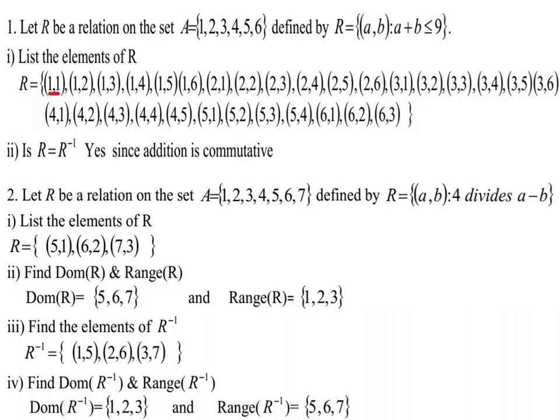Simply, the elements of R could be listed as: (1,1) since one plus one is less than or equal to nine; (1,2) since one plus two is less than or equal to nine; (1,3) since one and three are elements of A and one plus three is less than or equal to nine. The list of elements of the relation R starts with (1,1), (1,2), (1,3).